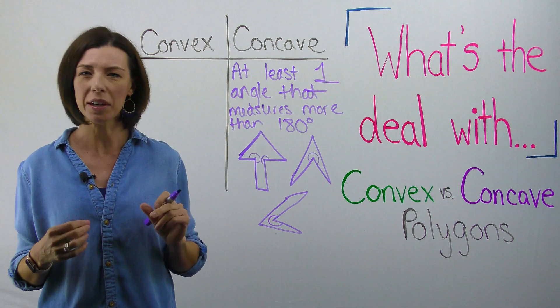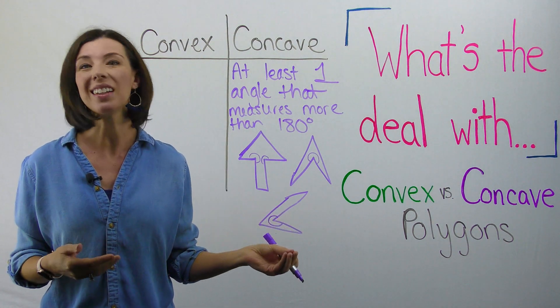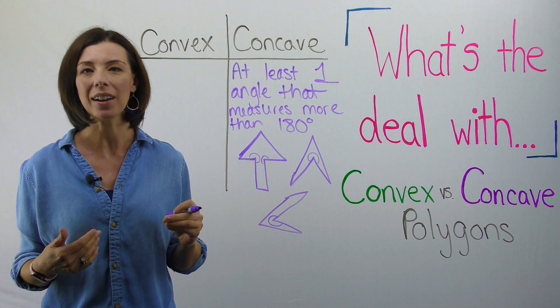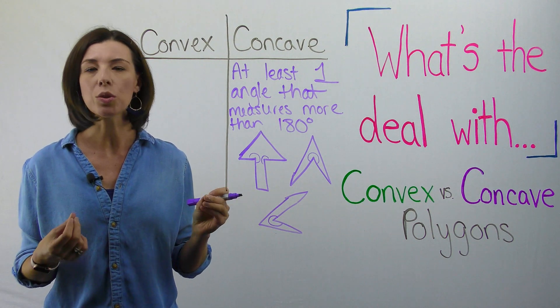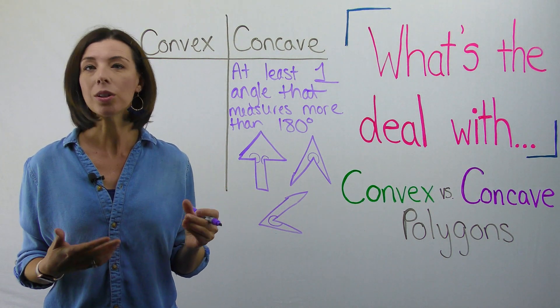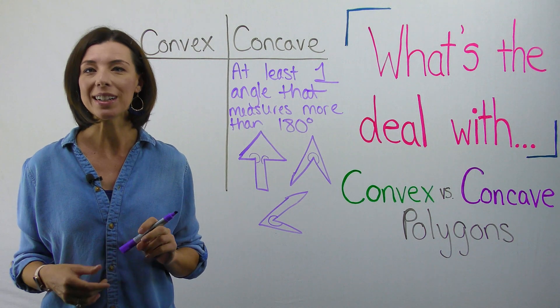When I think of convex polygons, these are going to be basically everything that's not a concave polygon. So these would be polygons where all of the angles measure less than 180 degrees.